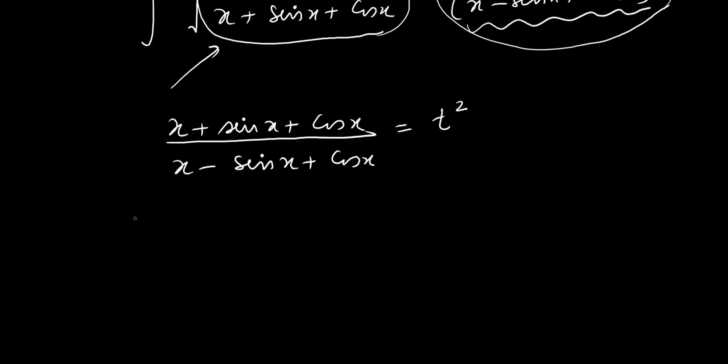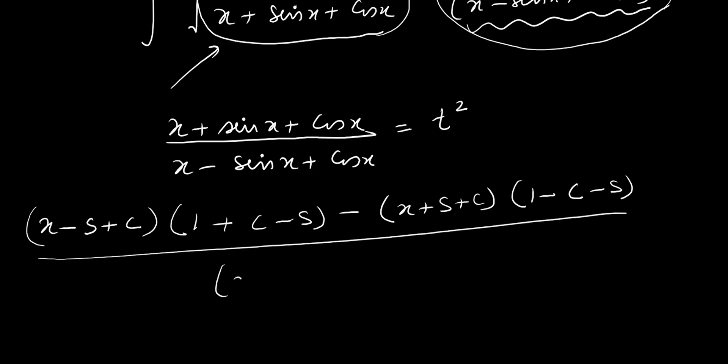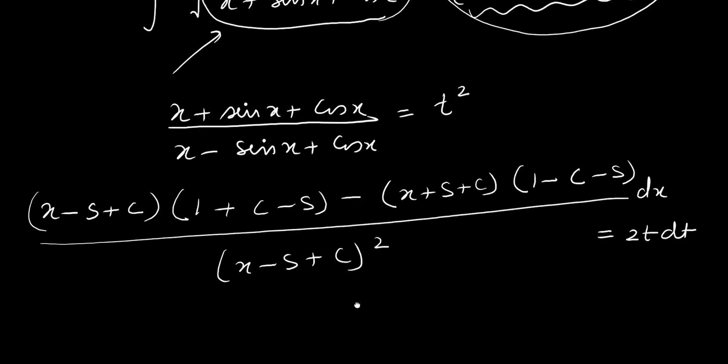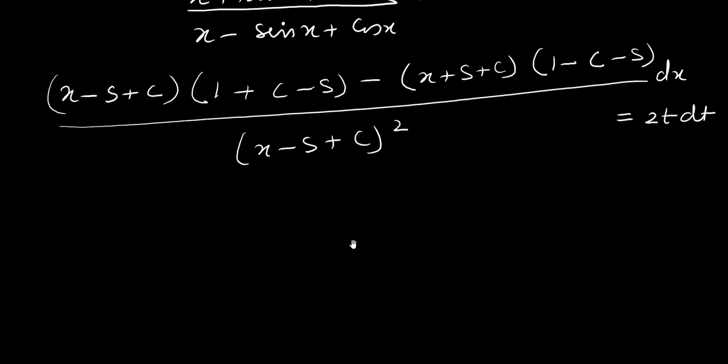Denominator (x minus sin plus cos) multiplied by the derivative of numerator which will be (1 plus cos minus sin). Then we have minus numerator multiplied by derivative of denominator. Coming to denominator, it is (x minus sin plus cos) whole square dx which will be equals to 2t dt. I am interested in checking what we are going to get on the left hand side especially the numerator because denominator to match kar gaya hai. What will we have? I am just going to club all the terms of x together. Taking all the terms of x, we have (1 plus cos minus sin) then minus (1 plus cos plus sin). So you can see that 1 got cancelled, sin got cancelled. I am just left out with 2x cos.